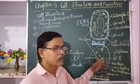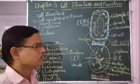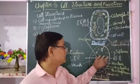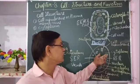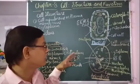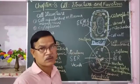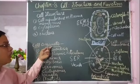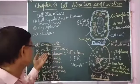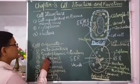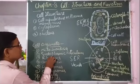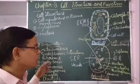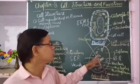Cytoplasm contains various substances such as nutrients — carbohydrates, proteins, etc. — dissolved in it, and it contains various small membrane-bound units called cell organelles, such as mitochondria, endoplasmic reticulum, ribosomes, Golgi bodies, lysosomes, centrosomes, vacuoles, and plastids. So these are the various cell organelles present in the cytoplasm.